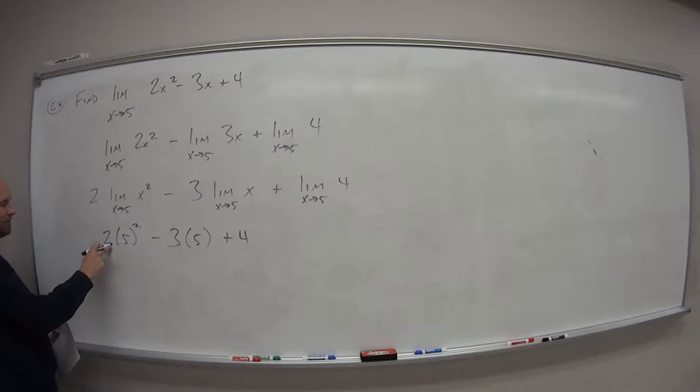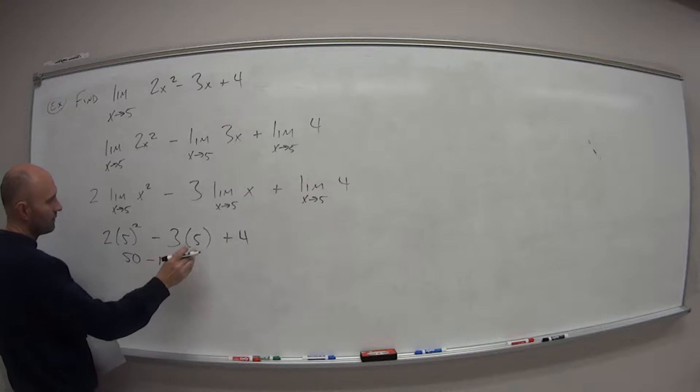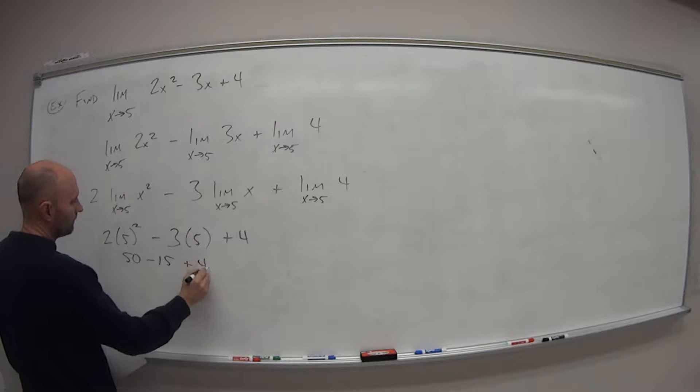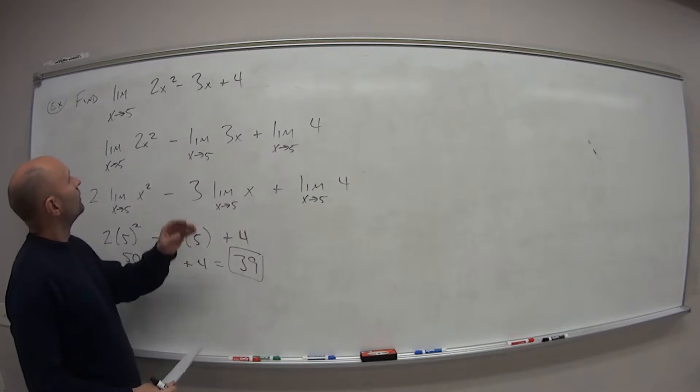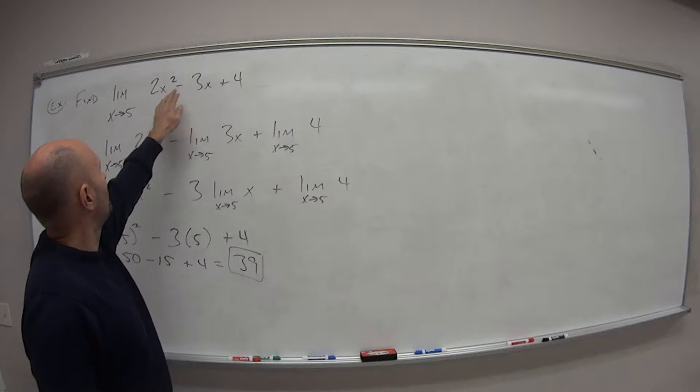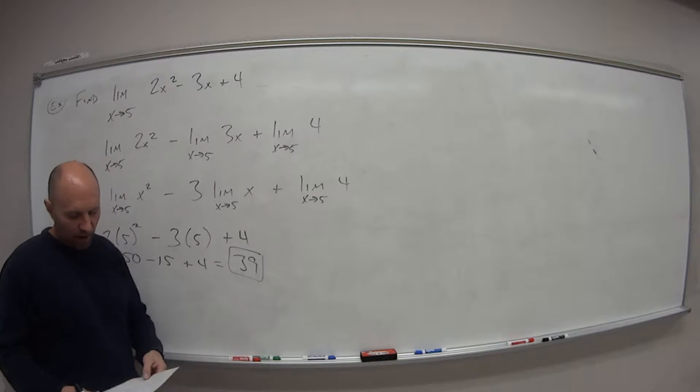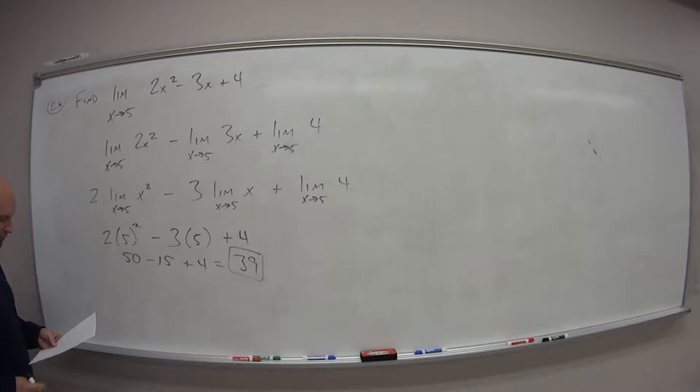So what do we have here if we simplify? 5 squared, 25 times 2 is 50, minus 15, plus 4, gives us 39. So the limit of this function as x approaches five is equal to 39.